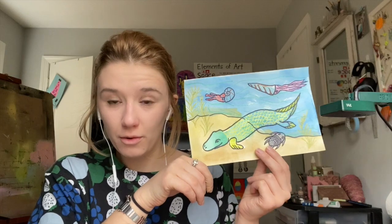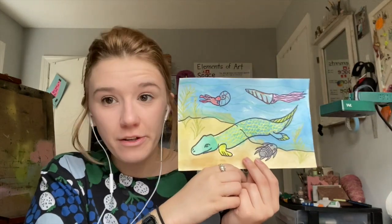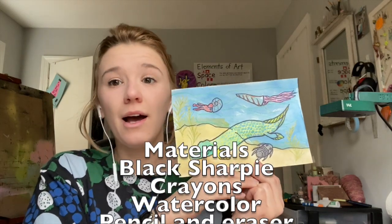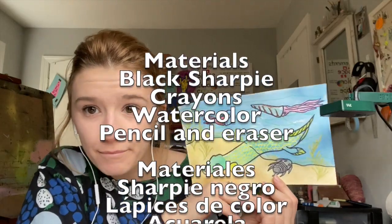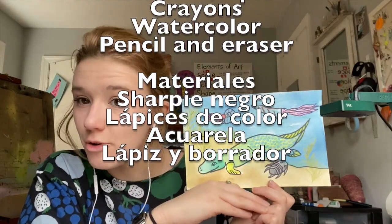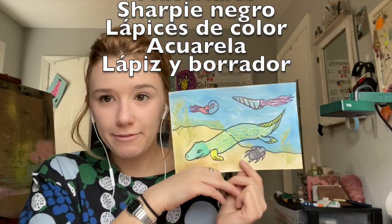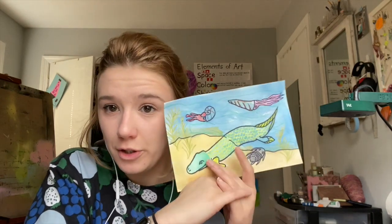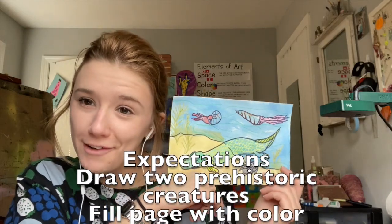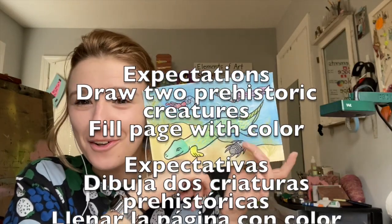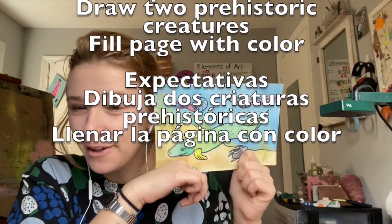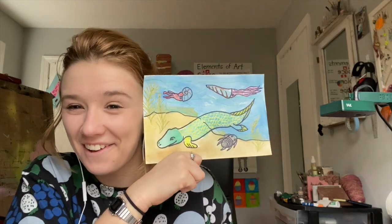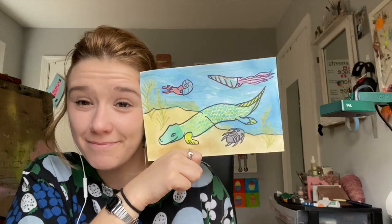To make this piece of artwork I used a lot of things you probably have at home: a black sharpie, some watercolor, and crayons. You could use a different kind of paint if you'd like — that's totally okay. For this project I'd like you to draw two creatures: the big tiktaalik, which is sort of like a crocodile with fins, and if you want, a little trilobite or ammonite. They're not too hard to draw. Color everything in nicely — those are my two expectations. Let's get started!